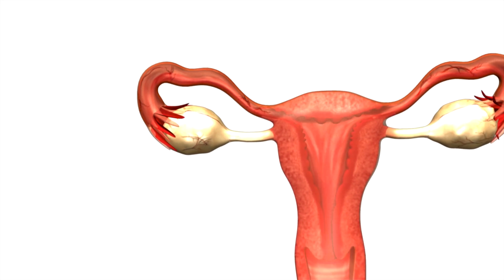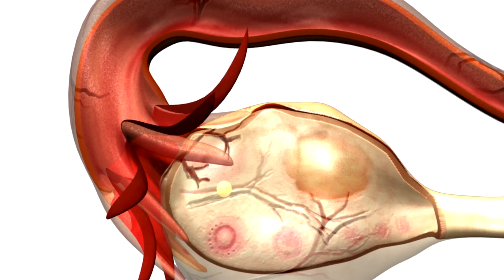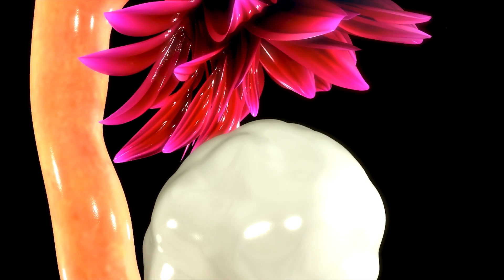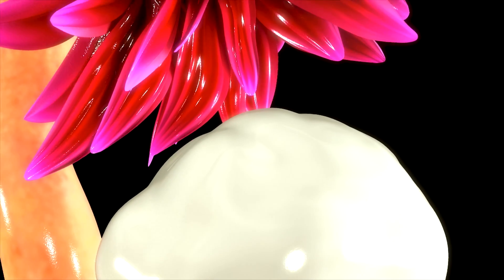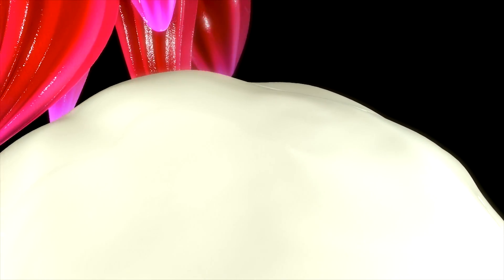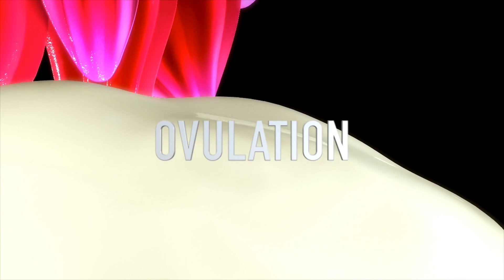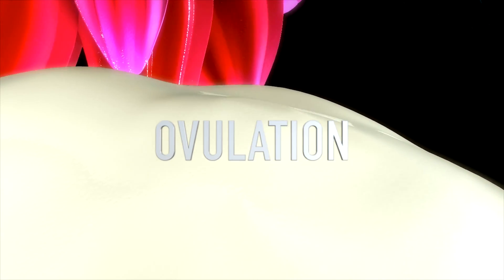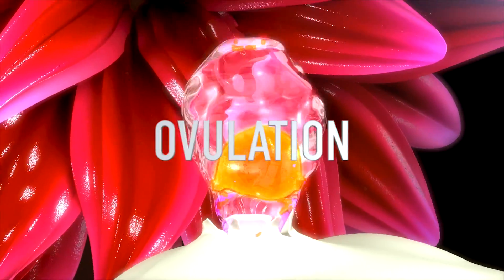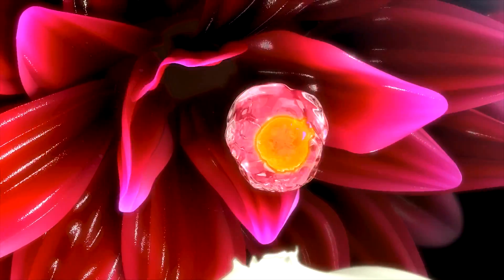Today we are talking about ovulation, fertilization and implantation. In the follicular phase of your menstrual cycle, rising levels of the hormone estrogen cause the ovary to develop and your egg is matured. It is released from the ovary — it is ovulation. The egg then moves down the fallopian tube where it waits for sperm.